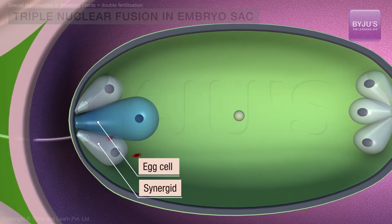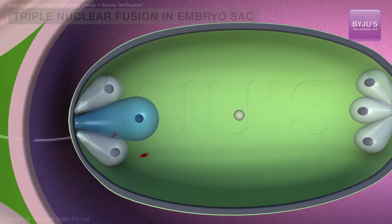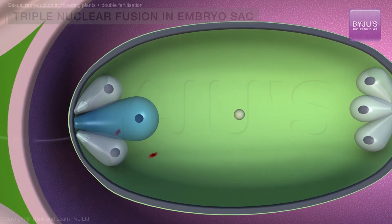As the egg cell and synergids are in close contact, sperms do not have to travel a long distance. The sperms exhibit amoeboid movement.